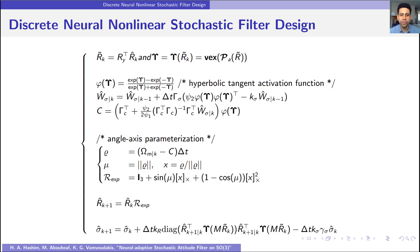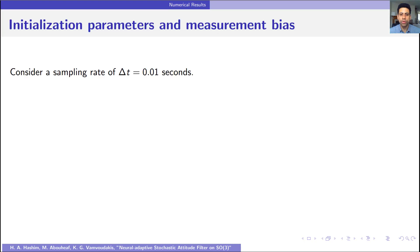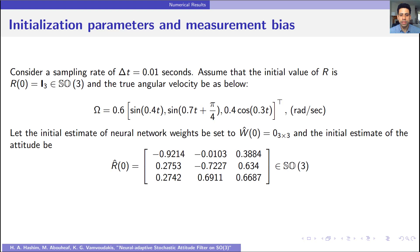Now let us move to the numerical results. Consider a sampling rate of Delta t equal to 0.01 seconds. Assume that the initial value of R is R(0) equal to the identity matrix and the true angular velocity is as follows. Let the initial estimate of the neural network weights be set as zeros, and let the initial estimate of the attitude be designed as follows, where the normalized equilibrium distance of attitude error is set to be very large, equal to 0.994, which approaches the unstable equilibrium.